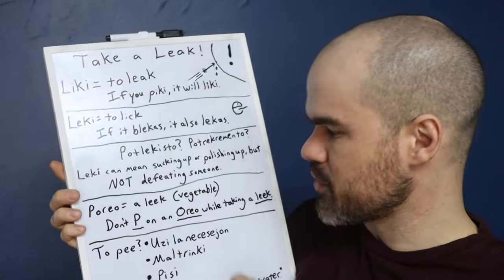If you need to say 'to pee,' you could say uzi la necesejon — to use the necessary place. Maltrinki — the opposite of drink — is to pee. I've heard someone say that just this month: 'Oh, I need to go maltrinki.' You could be more literal and say pisi — to piss — or urini — to urinate; I'd only use urini talking about a kitten you're caring for. Normally say 'I need to use the restroom' or 'I need to maltrinki.' Don't use flowery phrases — be literal. Thank you guys so much for watching, and have a wonderful day. Patrons, thank you so much for your support in making these videos and for helping people explore Esperanto.